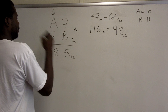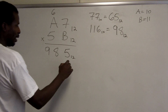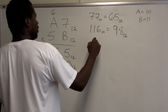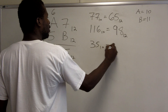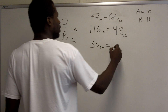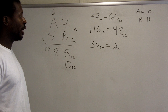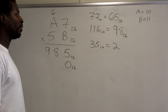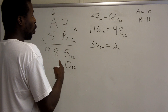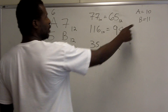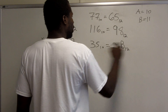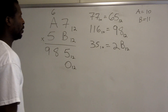Now I add a zero for the next row and multiply 5 by 7, giving 35 base 10. How many groups of 12 are in 35? There are two groups — a third would reach 36 — so two groups of 12, giving 24, with a remainder of 11. Since 11 is represented by 'b', 35 base 10 is 2b base 12. I record the b and carry the 2.